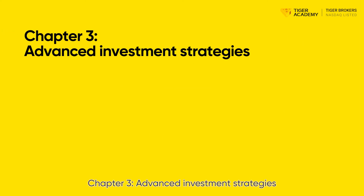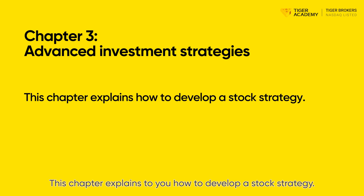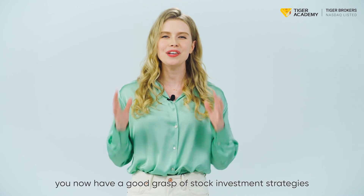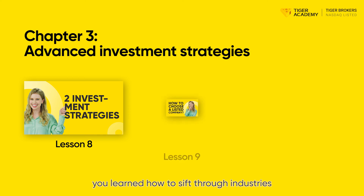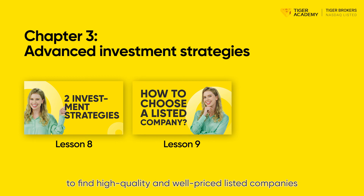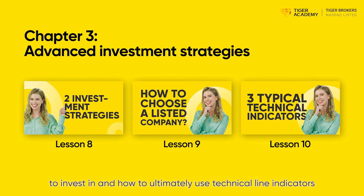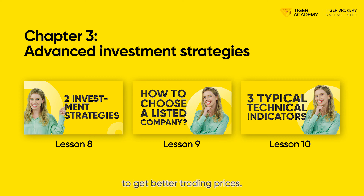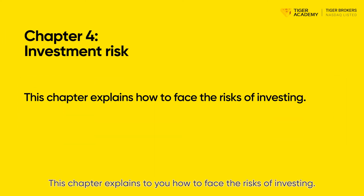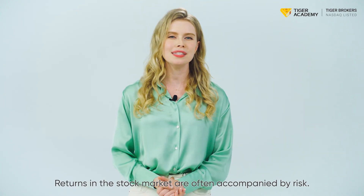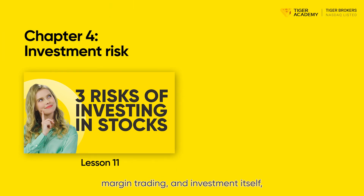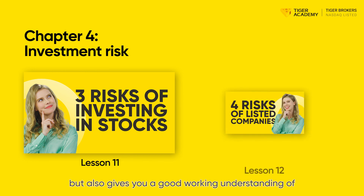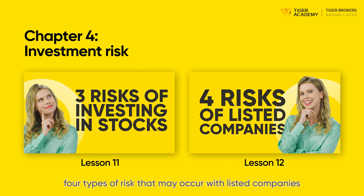Chapter 3: Advanced Investment Strategies. This chapter explains how to develop a stock strategy. You now have a good grasp of stock investment strategies and macro elements such as policy and capital that must be known in order to operate in the stock market. In addition, you learned how to sift through industries to find high-quality and well-priced listed companies to invest in, and how to ultimately use technical line indicators to get better trading prices. Chapter 4: Investment Risk. This chapter explains how to face the risks of investing. Returns in the stock market are often accompanied by risk. This chapter explains the risks of penny stocks, margin trading, and investment itself, but also gives you a good working understanding of four types of risks that may occur with listed companies and how to deal with them.